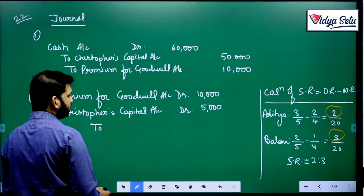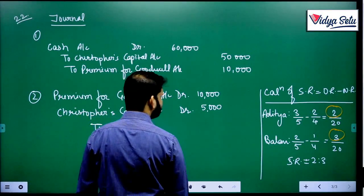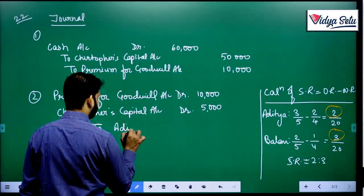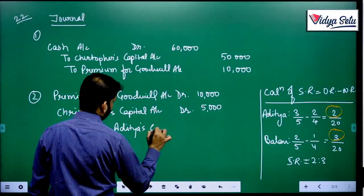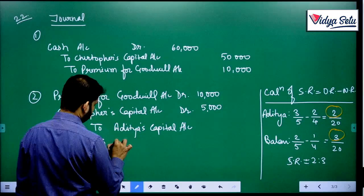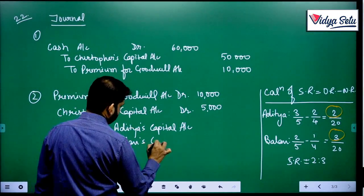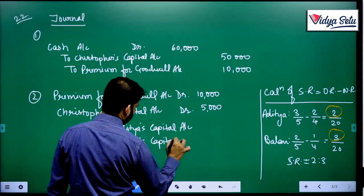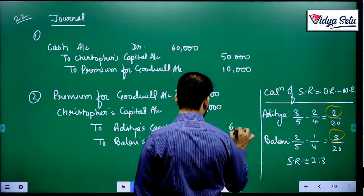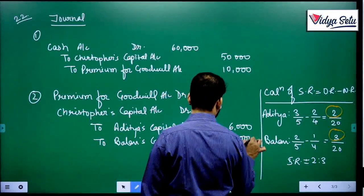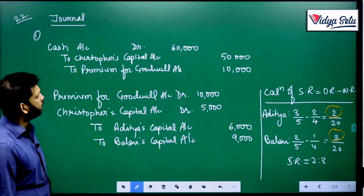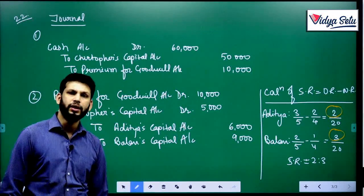So 15,000 in 2 to 3, that is 6 and 9 in the sacrificing ratio. And the question is done. Thank you.